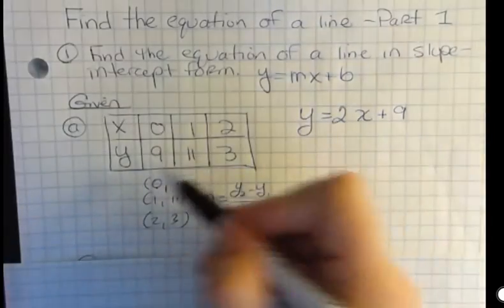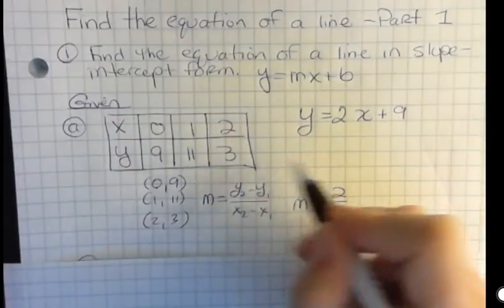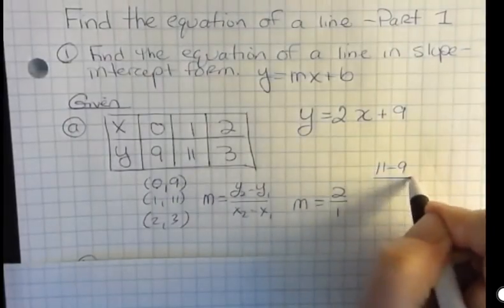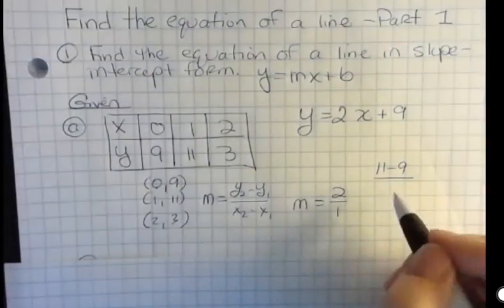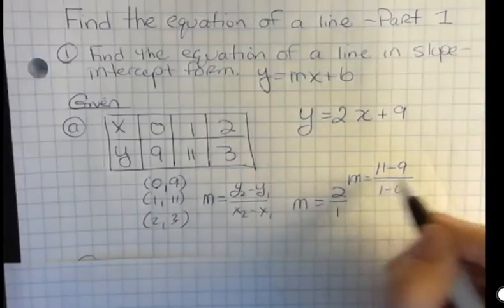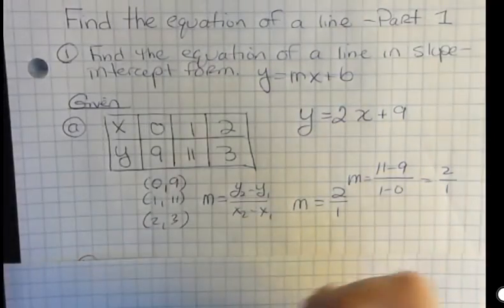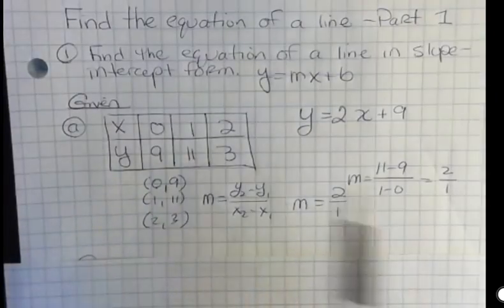If you wanted to though, you could plug that in. You could say, I have 11 minus 9 on the top, and I have 1 minus 0 on the bottom, and then you could see that's 2 over 1, and go, oh yeah, that's right. But you can also see it just by looking at the pattern.